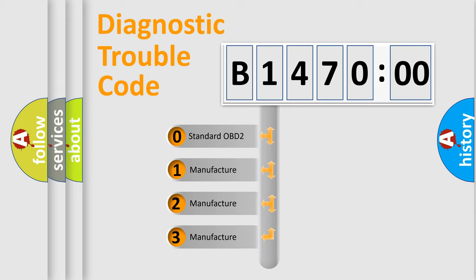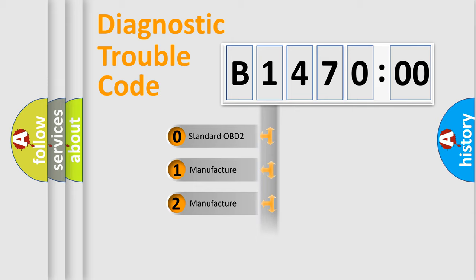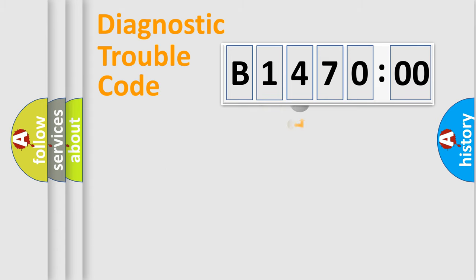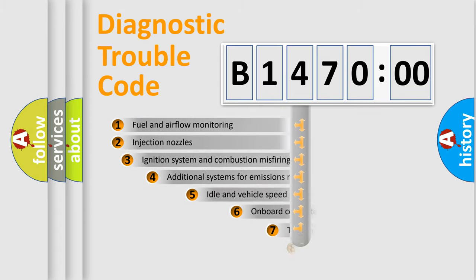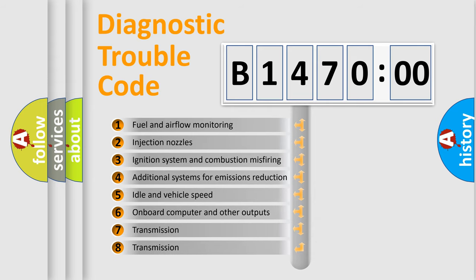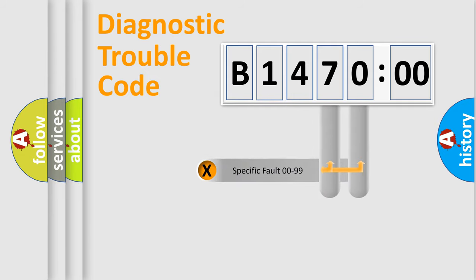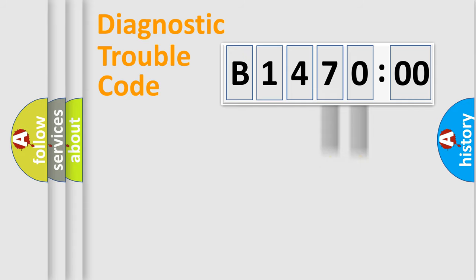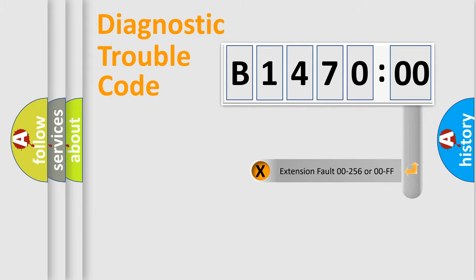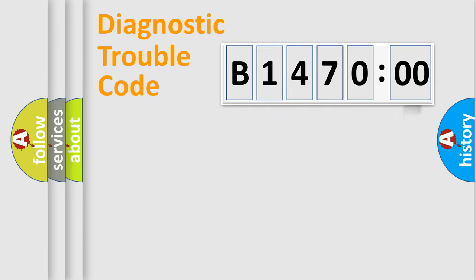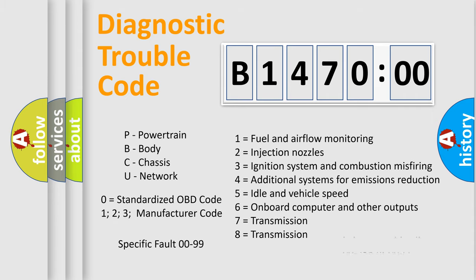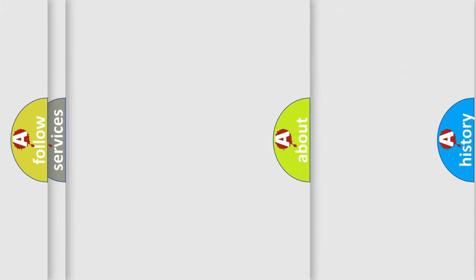If the second character is expressed as zero, it is a standardized error. In the case of numbers 1, 2, or 3, it is a manufacturer-specific error expression. The third character specifies a subset of errors — this distribution is valid only for the standardized DTC code. Only the last two characters define the specific fault of the group. The add-on to the error code serves to specify the status in more detail, for example a short to ground. Such a division is valid only if the second character is expressed by the number zero.